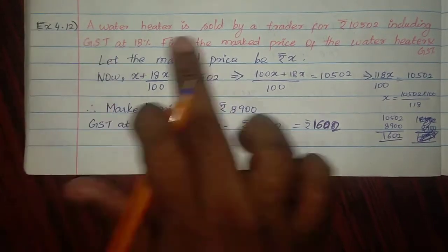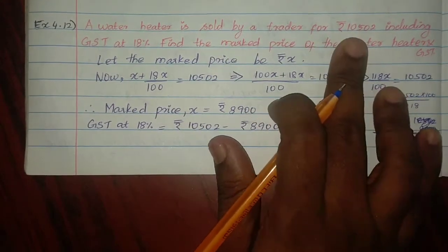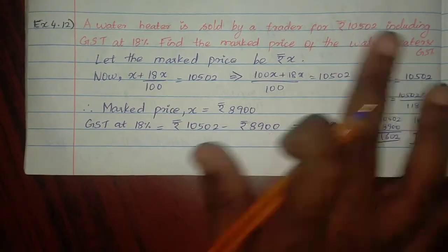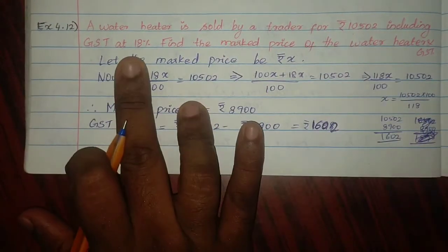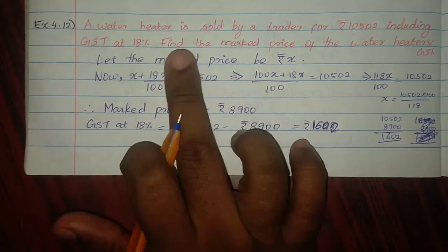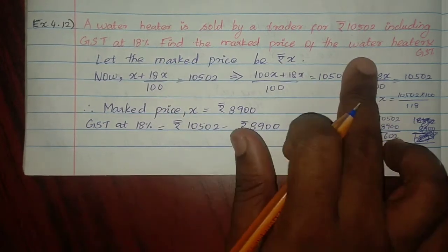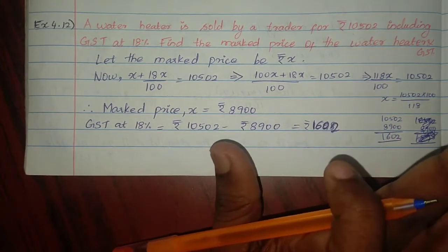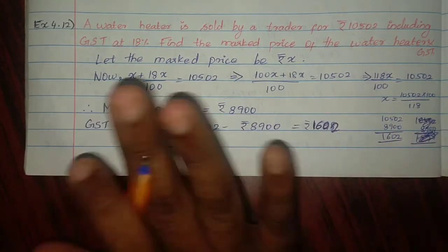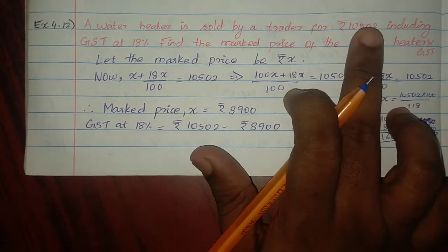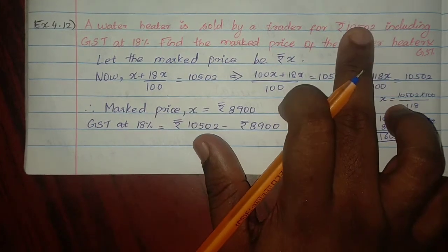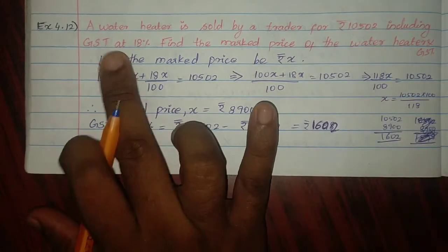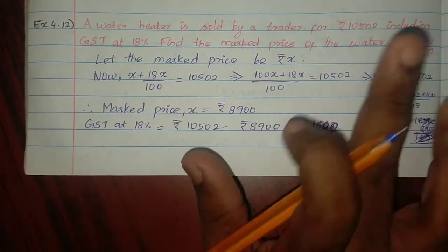A water heater is sold by a trader for Rs. 10,500 including GST at 18%. Find the market price of the water heater and the GST amount. We need to find the market price and the GST value separately.